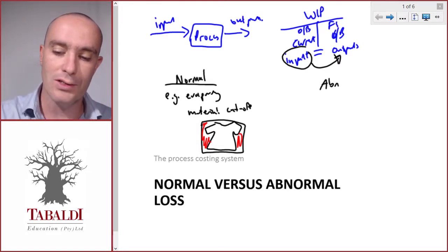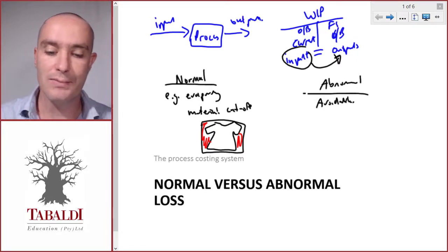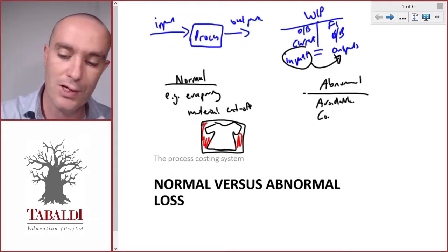What about abnormal losses? Abnormal losses are avoidable. They shouldn't be happening. If there's an abnormal loss, it indicates that there's a problem that needs to be addressed. We also call them controllable.